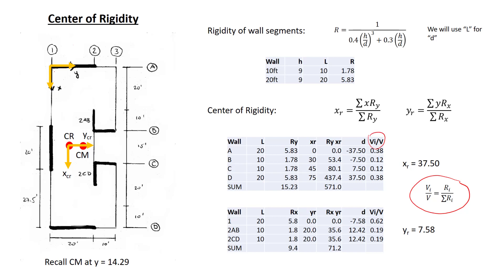divided by V, the total shear, is given by the rigidity divided by the total rigidity. We can see that the 20-foot walls take each 38% of the shear, whereas the 10-foot walls each take 12% of the shear in the x direction. In the y direction, the 20-foot wall takes 62% of the shear.